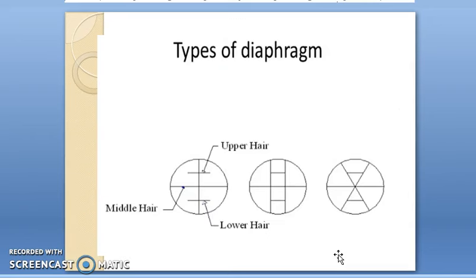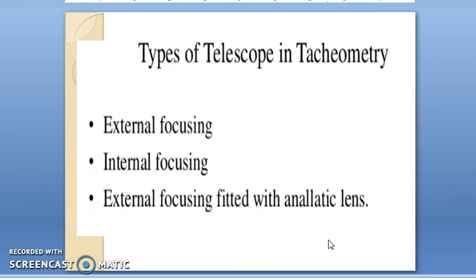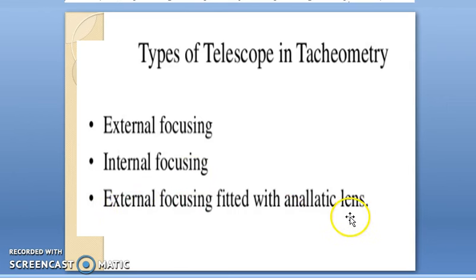There are different types of diaphragms that can be used. The figure shows three types of diaphragms generally available with tachymetry instruments. There are also different types of telescopes used in tachymetry: the first is external focusing, the second is internal focusing, and the third is external focusing fitted with an analytic lens.